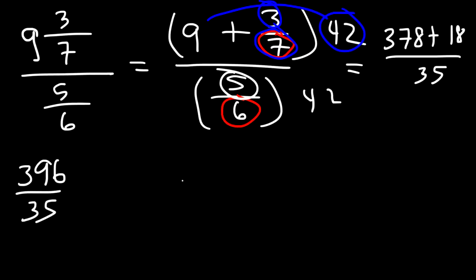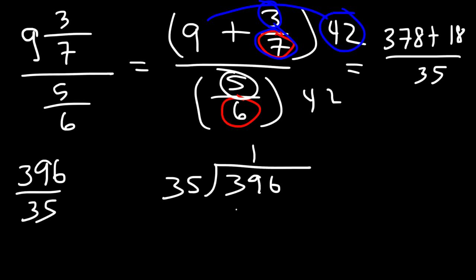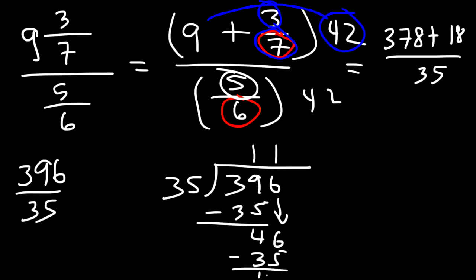Then just use long division: 35 goes into 39 one time with a difference of 4, bring down the 6, 35 goes into 46 one time with a difference of 11. So the final answer is 11 and 11 over 35, which matches what we had before.